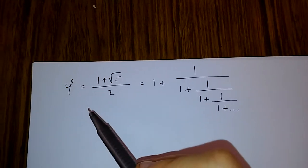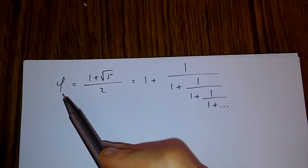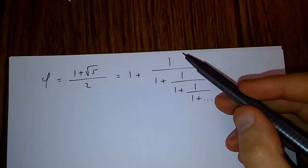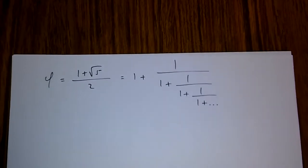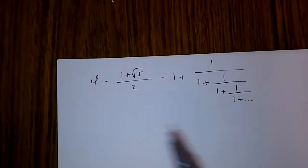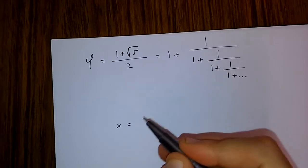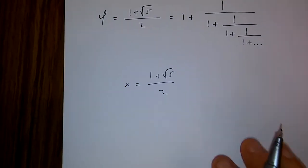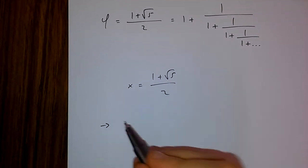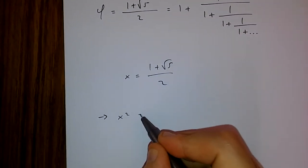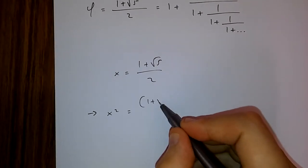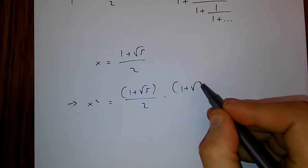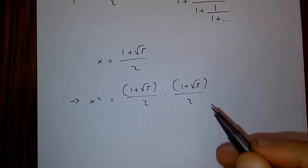In this video, I'm going to be proving to you that the golden ratio is equal to a continued fraction. To prove this, I first have to say that x is equal to 1 plus root 5 over 2. This means that x squared is equal to 1 plus root 5 over 2, times 1 plus root 5 over 2.